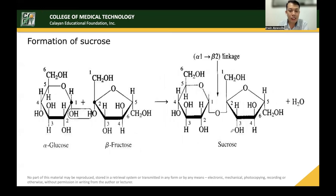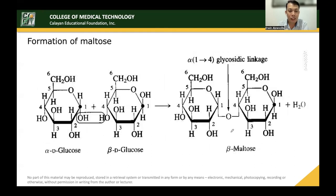The formation of sucrose involves an alpha-1 to beta-2 linkage. The formation of maltose uses a 1,4 glycosidic linkage. In both cases the same process of dehydration occurs — removal of water — to connect the sugar units.